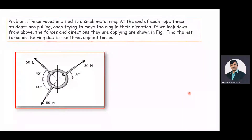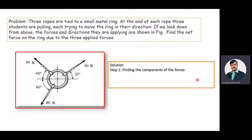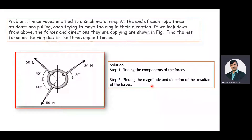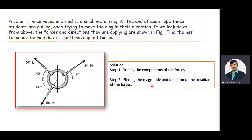In order to find the net effective force acting on the metal ring, we are considering two steps. The first step is finding the components of the forces — that is, we need to find the horizontal as well as vertical components for the forces of 30 Newton, 50 Newton, and 80 Newton. In the second step, we will find the magnitude as well as direction of the resultant of the forces — that is, the net effective force acting on the metal ring.